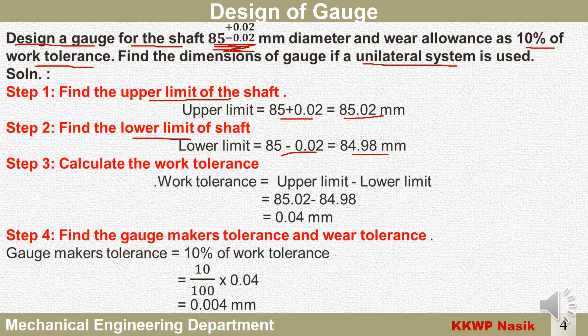Third step: calculate work tolerance. Work tolerance equals upper limit minus lower limit = 85.02 − 84.98 = 0.04 mm. Fourth step: find gauge maker's tolerance and wear tolerance. Gauge maker's tolerance is not given, so we take 10 percent of work tolerance = 10/100 × 0.04 = 0.004 mm.